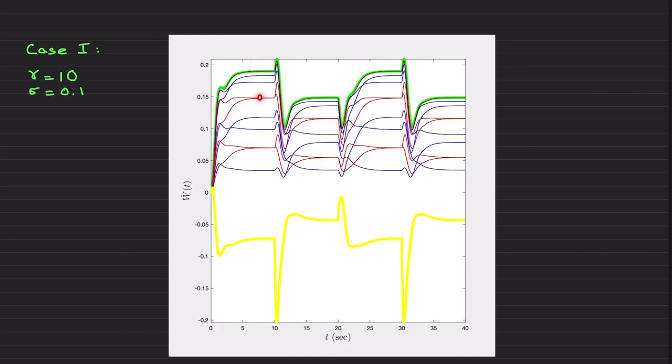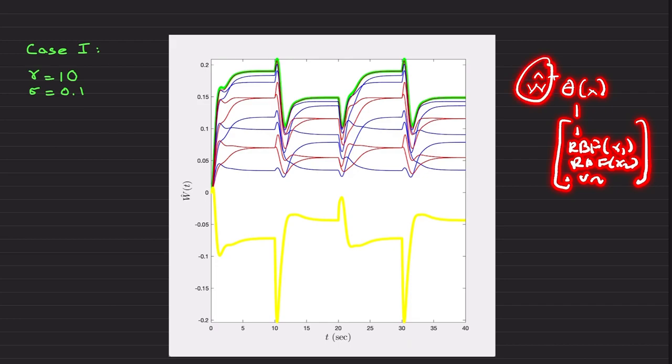This yellow is the weight estimate that corresponds to the UN basis function. The blue ones are the weight estimates that correspond to the radial basis functions that uses x1 state. And the red weight estimates correspond to the radial basis functions that multiplies to the radial basis functions that uses x2. So to make this point clear, we have w hat transpose, this theta. Theta includes the bias, radial basis functions that depends on x1, radial basis functions that depends on x2 and UN.